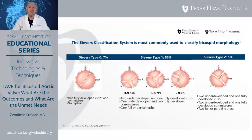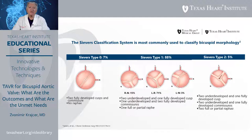Regarding classification and morphology of bicuspid aortic valve, the Severs and co-workers classification is the most commonly used. Severs Type 1 occurs in about 7 percent of patients and consists of two fully developed cusps and two underdeveloped cusps, with a raphe occurring most commonly between the left and right coronary cusp in 71 percent of patients, or between the right coronary cusp and non-coronary cusp in about 15 percent, and less commonly between the left coronary cusp and non-coronary cusp in 3 percent of patients.